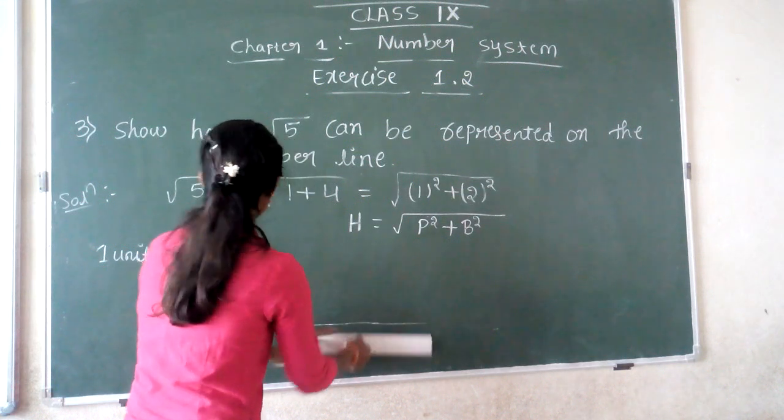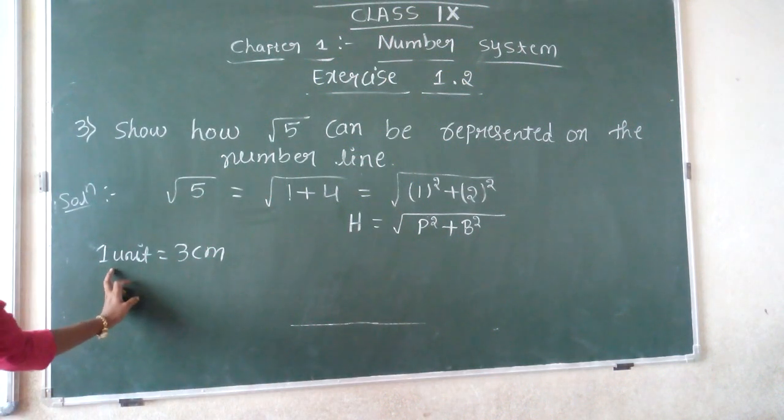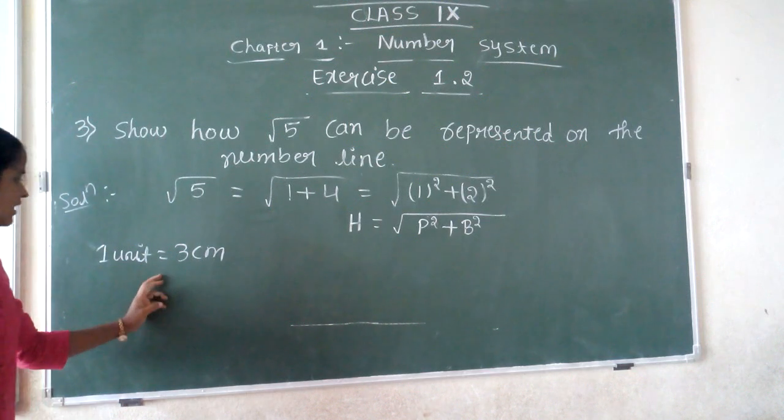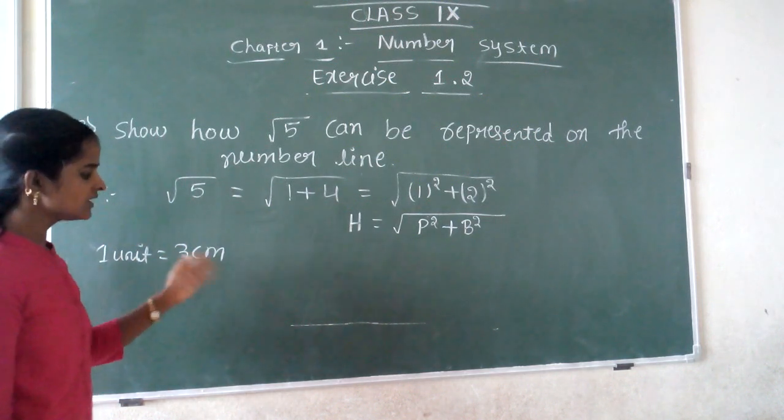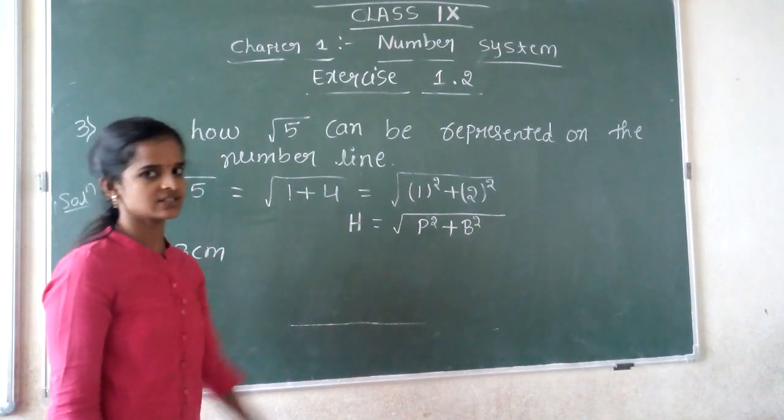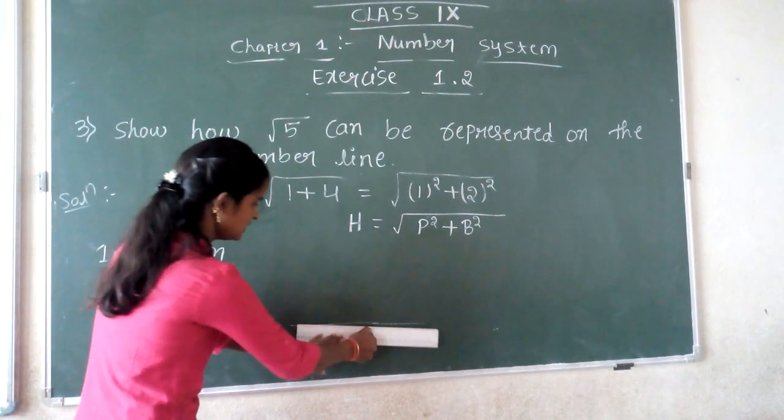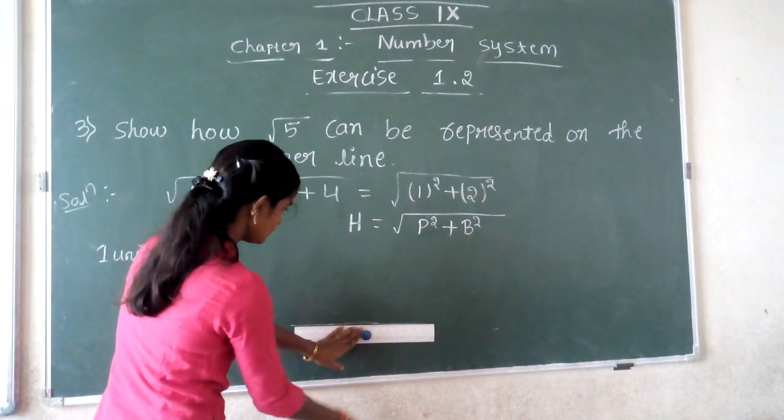Next, you have to take 1 unit equal to 3 cm. You could take 4 cm or 5 cm, but here you have to take equal distance. So, 1 unit equals 3 cm.